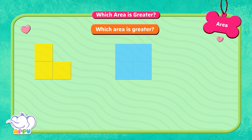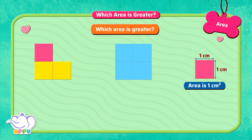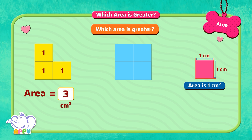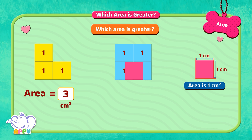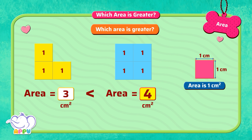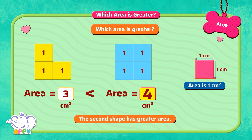Which area is greater? The shapes are made of 1 cm squared. The area of the first shape is 1, 2, 3 — that is 3 square centimeters. The area of the second shape is 1, 2, 3, 4 — that is 4 square centimeters. 4 square centimeters is greater than 3 square centimeters. So the second shape has greater area.